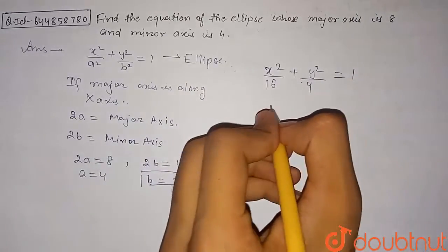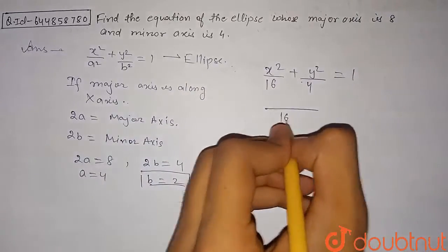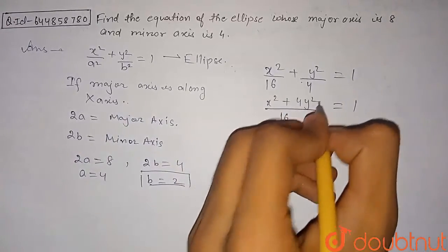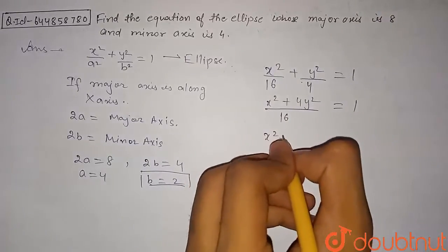After taking LCM, we have x²/16 + y²/4 = 1. From here, x² + 4y² = 16, and this is our required ellipse equation.